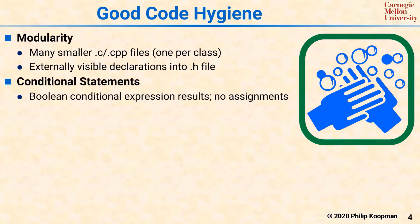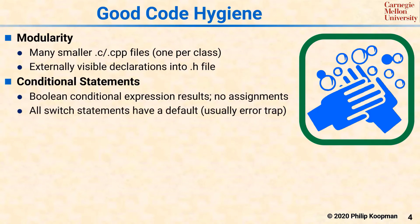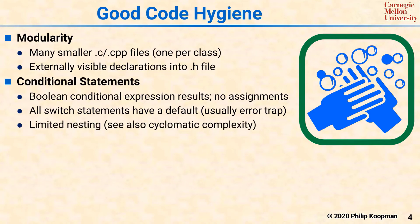Conditional statements are a source of significant complexity and must be made as clear as possible. Each conditional clause should have a boolean result — for example, if you want to test whether an integer is zero, you should compare that integer value to zero rather than relying on the C language characteristic of treating any non-zero value as true. Additionally, conditional clauses should have no side effects, including no assignments. All switch statements should have a default clause, and in most cases that default should be an error trap. If nesting should be limited to manage complexity; this is discussed further in the tutorial on cyclomatic complexity.